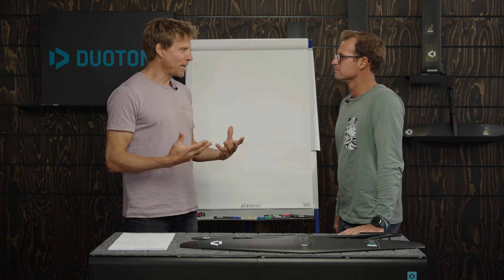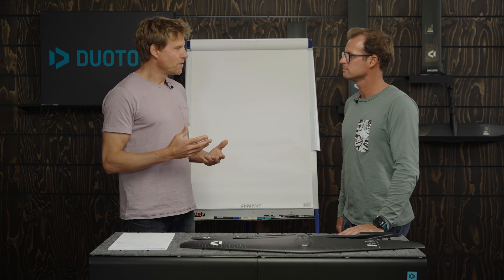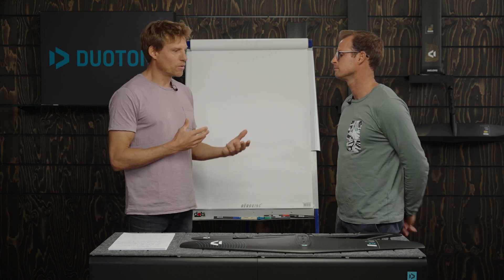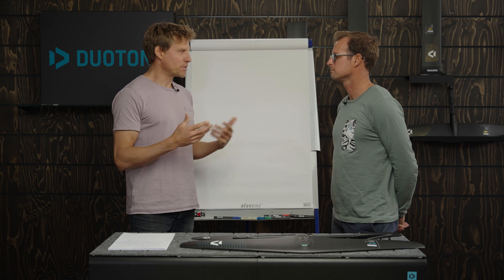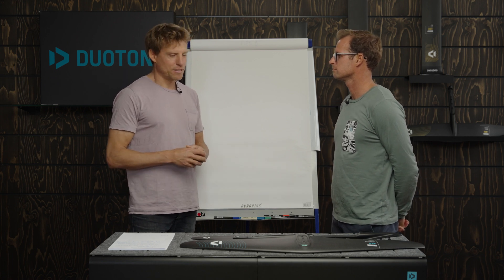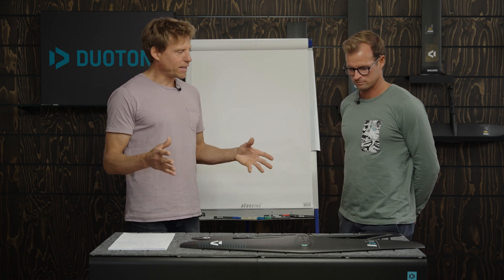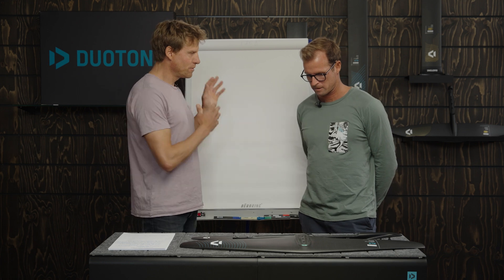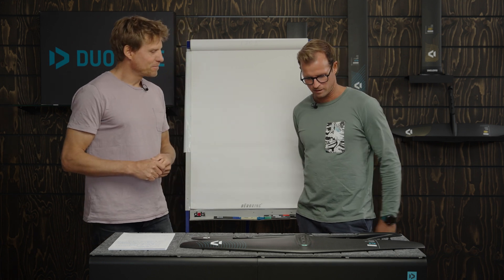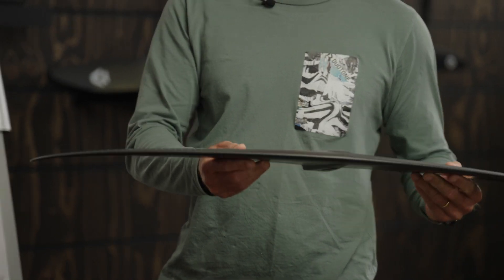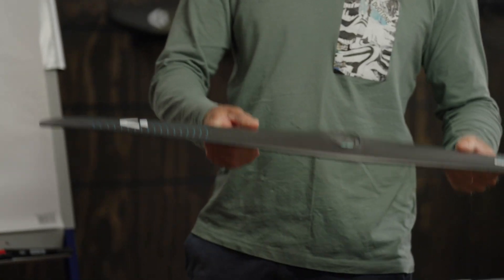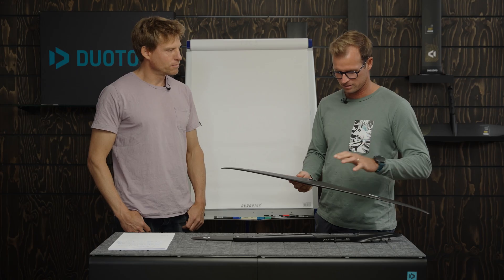I think a lot of these basics are quite important for people to understand why certain foils look how they look and what you want to achieve with that. So maybe just go quickly through the components we have before you get the pen in your hand. Sure, so first of all we've got the front wing which is actually going to generate the lift - that's an important part of our foil.